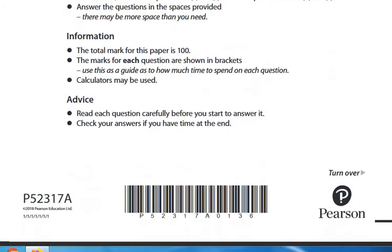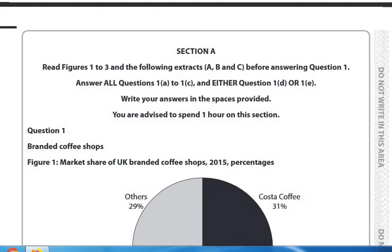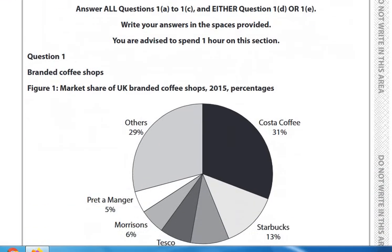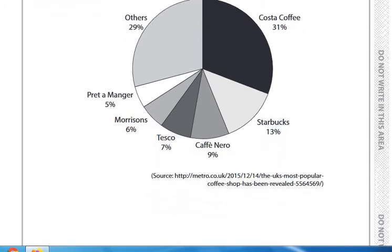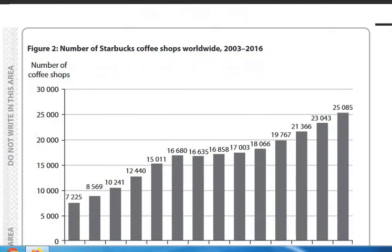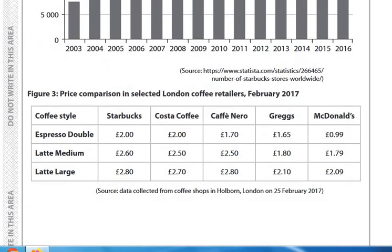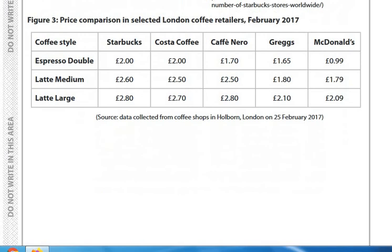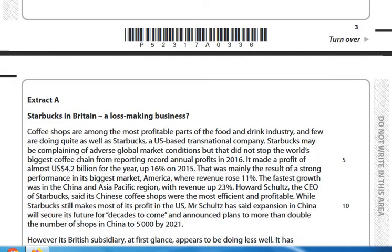So, 100 marks, 120 minutes. There are two questions. This first question is about the market for coffee bars — you've got a pie chart of chain market share and another chart showing growth of Starbucks, plus some information on prices. You need to use this information, so you've got to use that 20 minutes reading time really well. You also need to develop your ability to comprehend numerical and written information quickly — this is a skill that can only be acquired through practice.